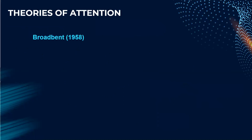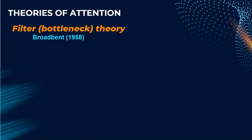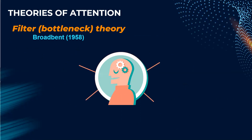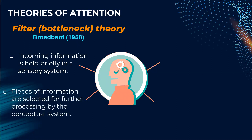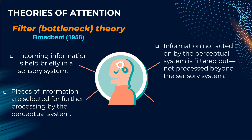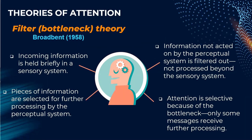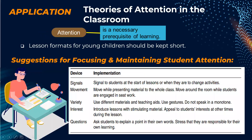Under information processing theories, we have the theories of attention. According to Broadbent (1958), this is called the filter or bottleneck theory. Incoming information is held briefly in a sensory system, then pieces of information are selected for further processing by the perceptual system. Information not acted on by the perceptual system is filtered out and not processed beyond the sensory system. Attention is selective because of this bottleneck — only some messages receive further processing.